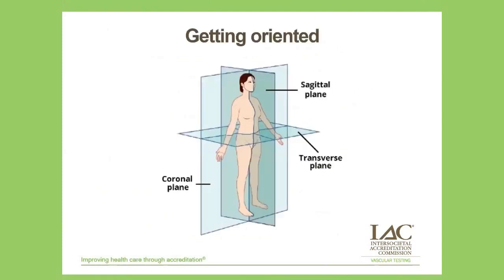In every imaging modality we have to take slices through the body to look at relevant anatomy. We have the transverse plane, which divides the body into upper and lower. We have the coronal plane, which divides the body into front and back sections, and the sagittal view, which divides the body into right and left halves. Every time we place the transducer on the patient we should be aware of the planes of view we are presenting.